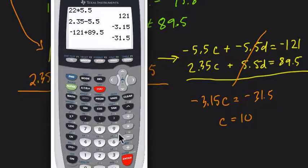Let's just test it. If you divide negative 31.5 by negative 3.15, we get 10.